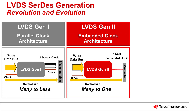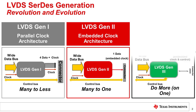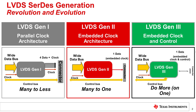Gen 2 devices take the serialization one step further by serializing the data and embedding the clock into a single differential pair with control running in parallel. And finally, Gen 3 takes it even further by serializing the data and embedding the clock and the control onto a single differential pair.